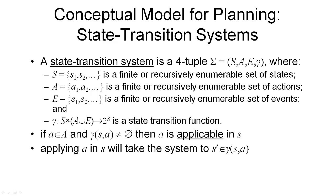The fourth and most complex component of a state transition system is the state transition function gamma. Gamma takes a state of the world as input and an action or event — so the second component is the union of all the actions and events. The result of applying the state transition function is another set of states. The notation two-to-the-S denotes the power set of all possible states, meaning an element of the set is itself a set of world states. So the state transition function takes a state and an action or event, and gives us all the possible states that may result.